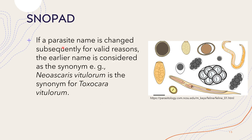If a parasite name is changed subsequently for valid reasons, the earlier name is considered a synonym. For example, Neo-Ascaris vitulorum is the synonym for Toxocara vitulorum. The former name of the nematode parasite Toxocara vitulorum was Neo-Ascaris vitulorum.